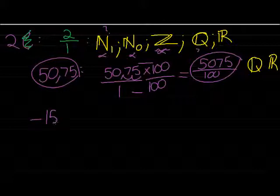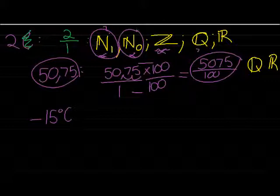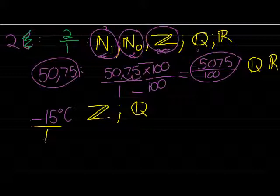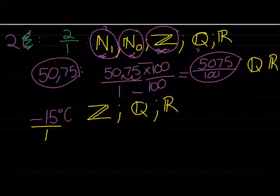We also found negative 15 degrees Celsius on the fridge. Is that a natural number? No — natural numbers are 1 and above. Is it a counting number? No — counting numbers are from 0 and above. Is it an integer? Yes — integers are all whole numbers including negatives. And since it can be written as negative 15 divided by 1, it is a rational number and definitely a real number.